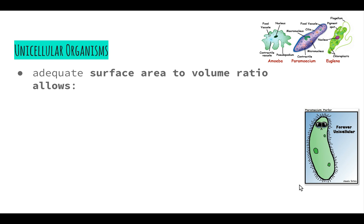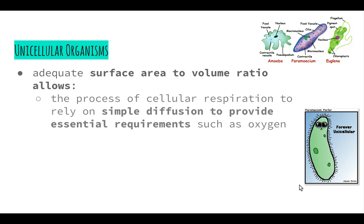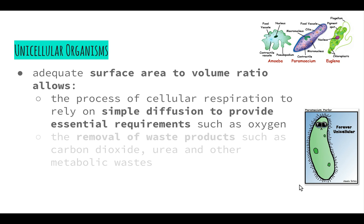This adequate surface area to volume ratio allows a couple of things to take place. It allows the process of cellular respiration to rely on simple diffusion to provide the essential requirements such as oxygen and glucose. Those substances are able to move straight from the environment into the organism and then into the mitochondria for respiration to take place.